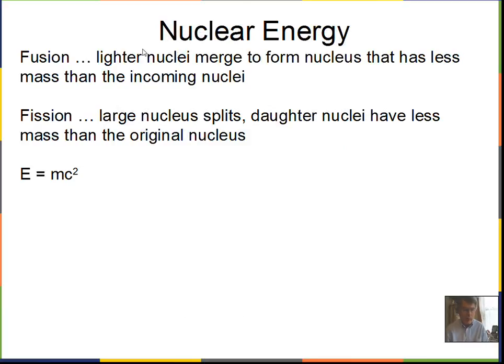Talking about fusion, in this situation we have nuclei that are small, that are light, near the beginning of the periodic table. They're merging and forming a nucleus that is closer to iron in the periodic table, towards the middle. These lighter nuclei merge and form a nucleus. Energy will be released if the resulting combined nucleus has less mass than the nuclei that came together. Mass is going to become energy.